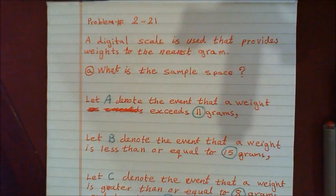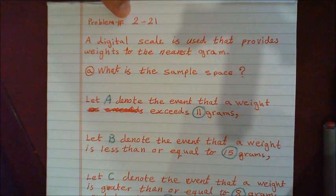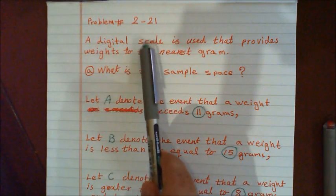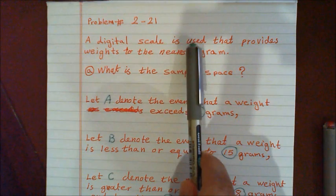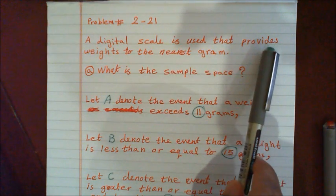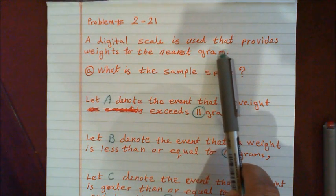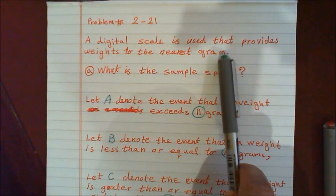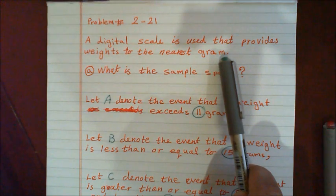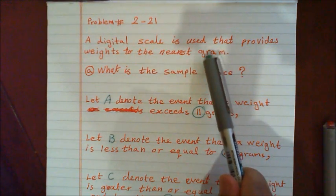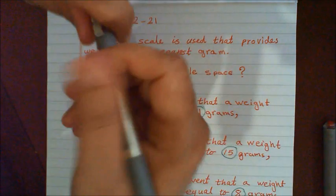From the book, we will have example 2.21. The problem is about the event and how you describe the event. It says a digital scale is used that provides the weight to the nearest gram — so no decimal places, just a complete integer number of grams. What is the sample space?